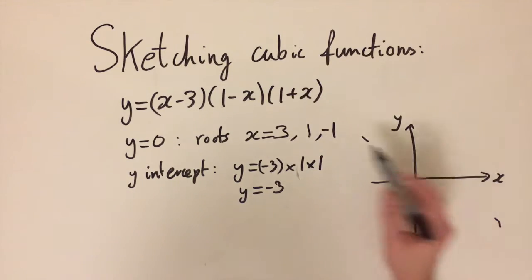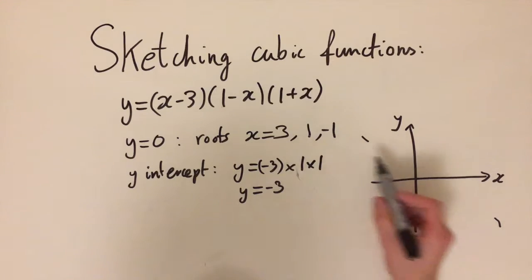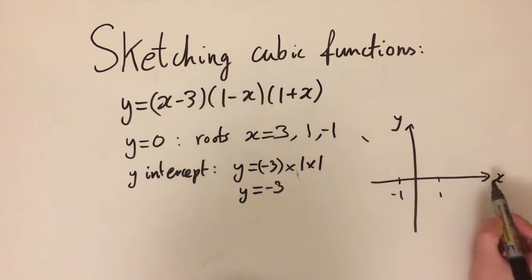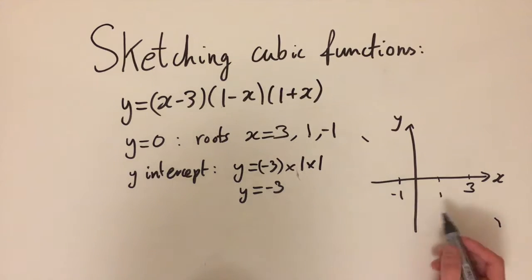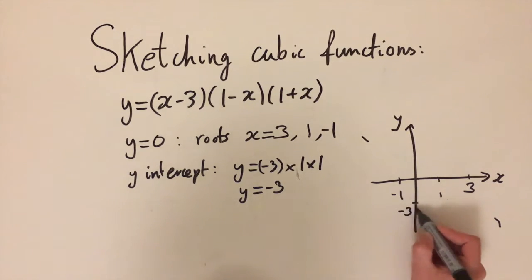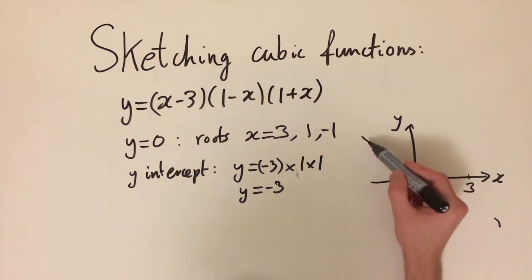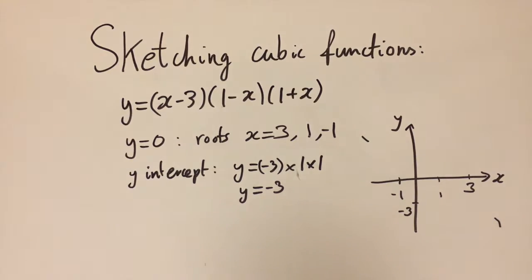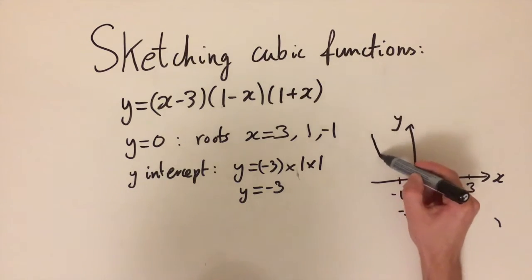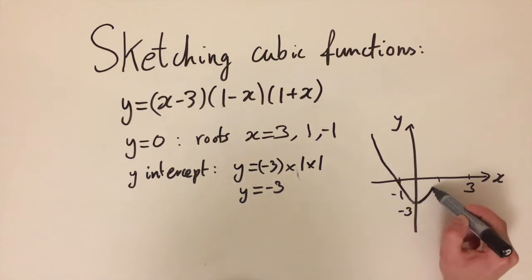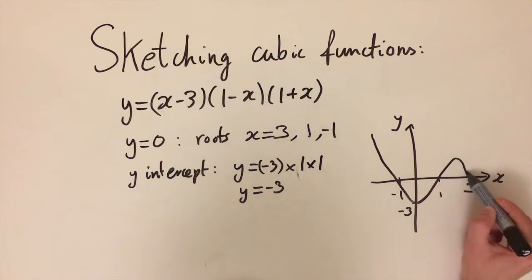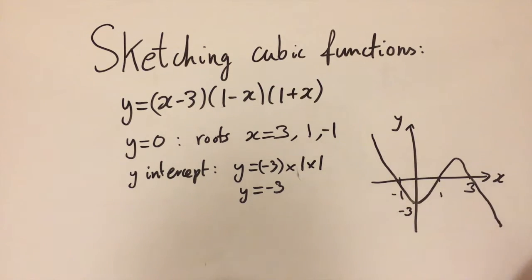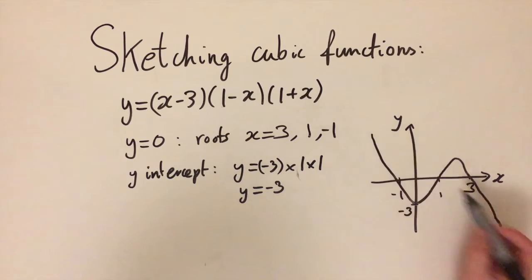We know the tail of the graph from the x cubed term. The curve crosses the x-axis at minus one, one, and three, and the y-intercept is at negative three. The curve needs to start up in the top left, go through these roots as a continuous curve, and end up in the bottom right corner. Going down through minus one, through the y-intercept, back up through the second root, turning around a second time, and going through the last root at three.